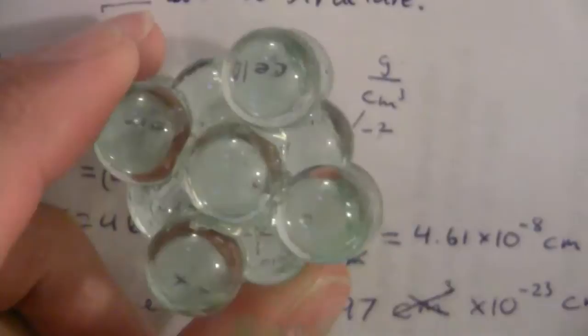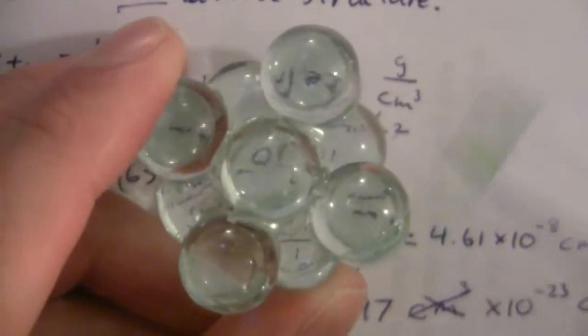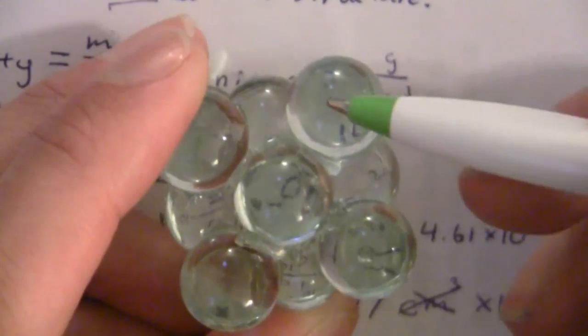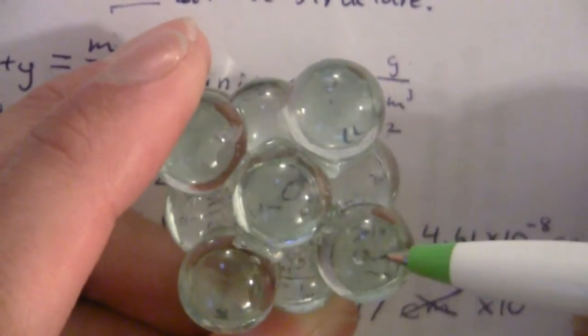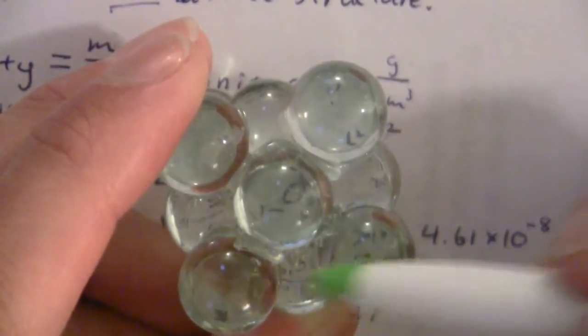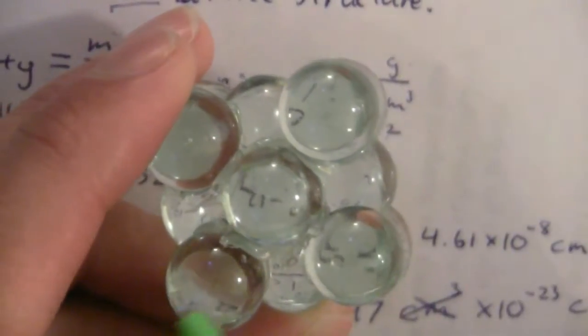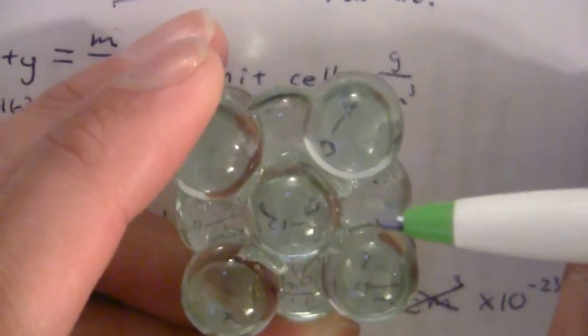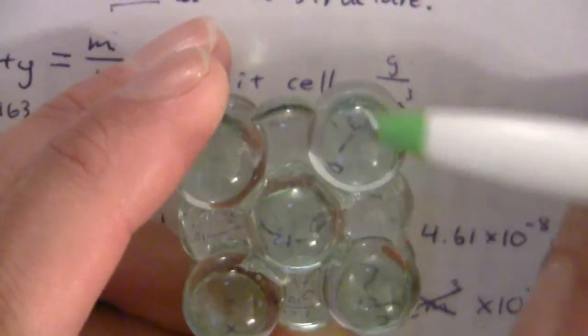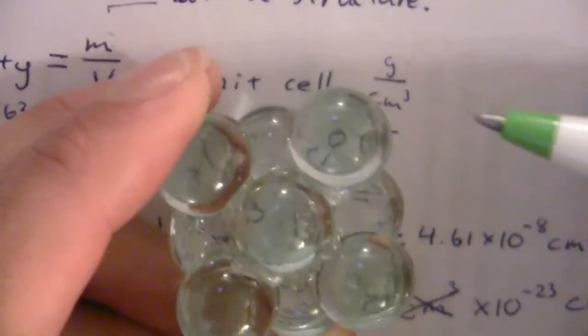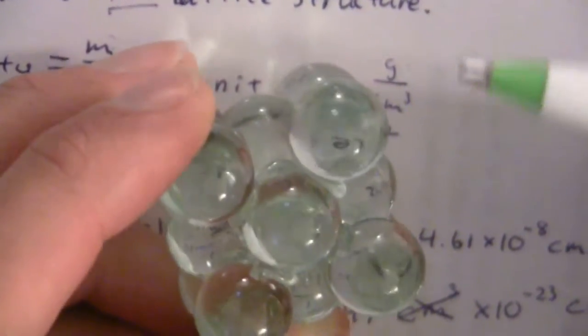Now remember, we're not counting up all of these spheres that you see here because we're going from the centers. The unit cell is from the center to center, so that cuts off some of the mass. And if we add this up, or you can remember that face-centered cubic has four atoms within the unit cell.